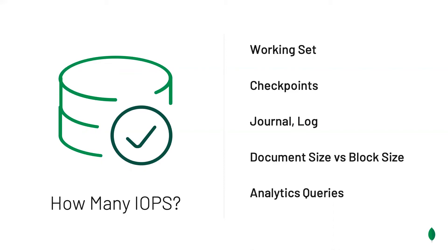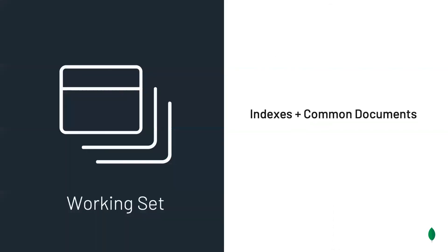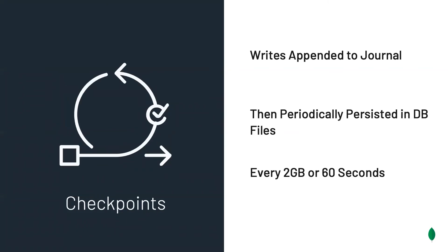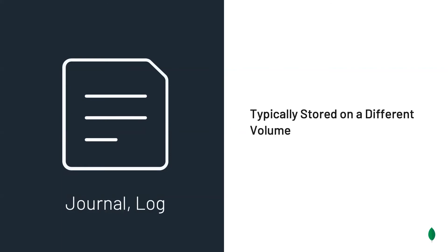Let's look at each of these. A working set — our indexes and commonly accessed documents — is best kept in RAM. Optimizing the working set really reduces the need to access storage and hence the need to provision available IOPS. The WiredTiger storage engine first performs writes sequentially to a journal file, then these changes are persisted in the database files either every two gigabytes or 60 seconds, whichever comes first. Since the journal file is typically stored on a different volume, we don't have to worry about journal performance in most cases.